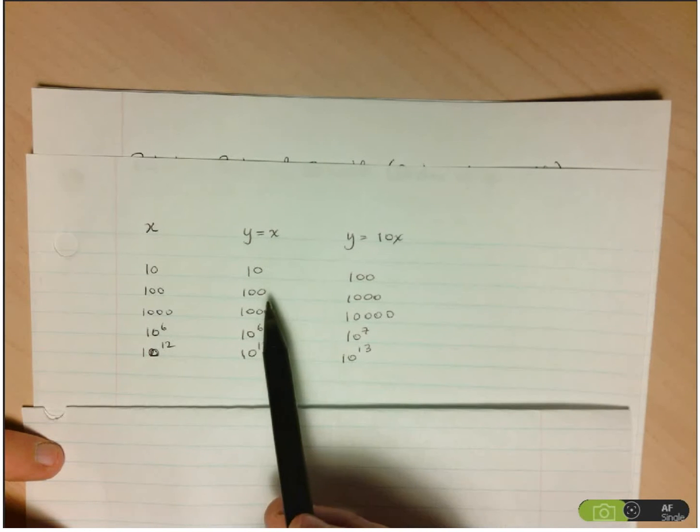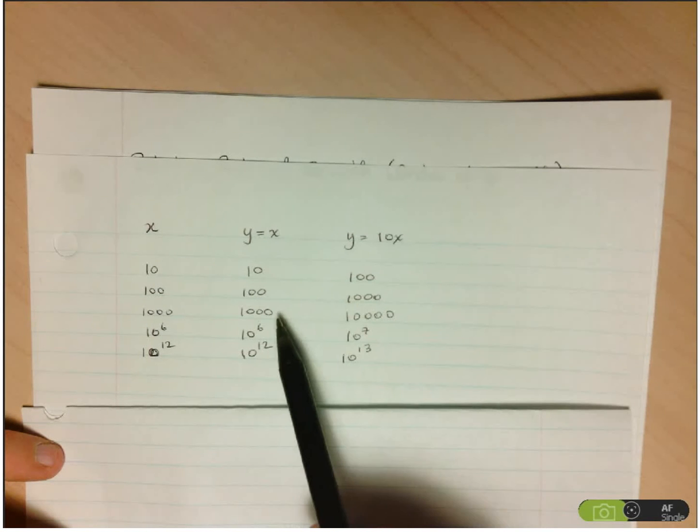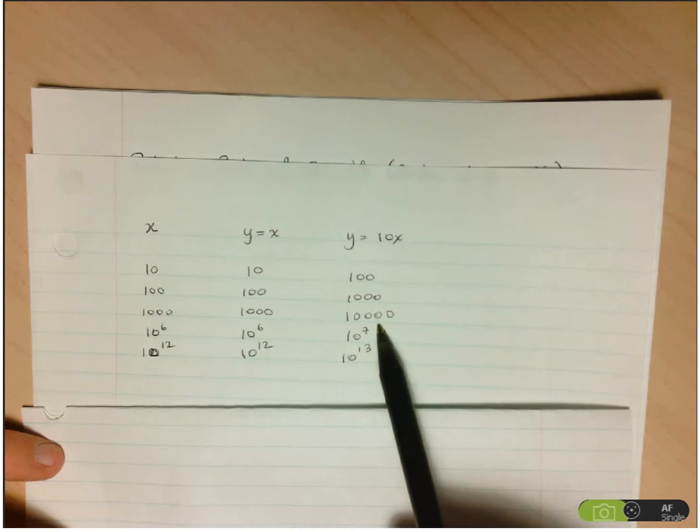However, when we look at the values here, so when x equals 10, 100, 1000, we see that this column, the numbers in the left column, never really become insignificant relative to the values in the right.